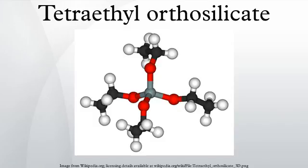TEOS is a tetrahedral molecule. Like its many analogues, TEOS is prepared by alcoholysis of silicon tetrachloride: SiCl4 + 4 ROH → Si(OR)4 + 4 HCl, where R equals C2H5.